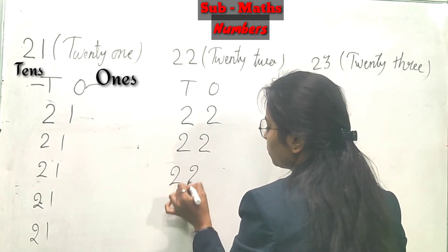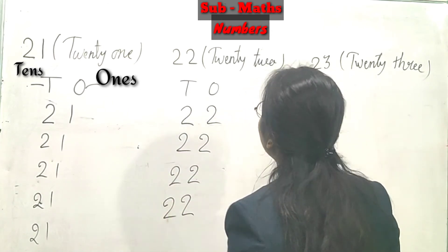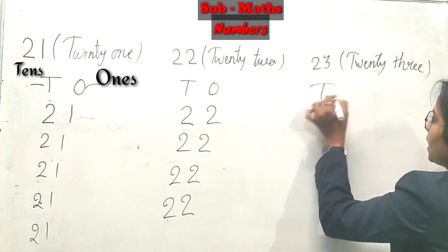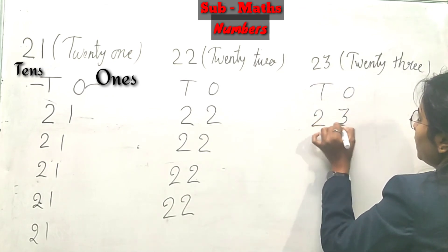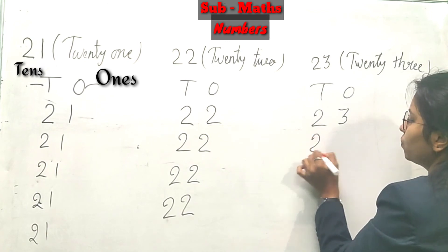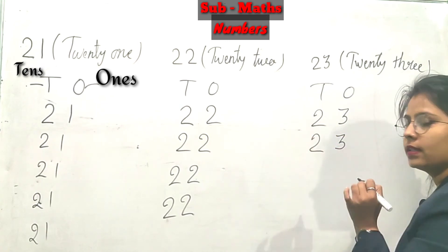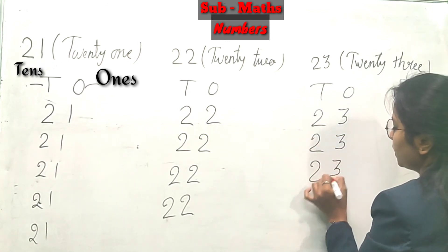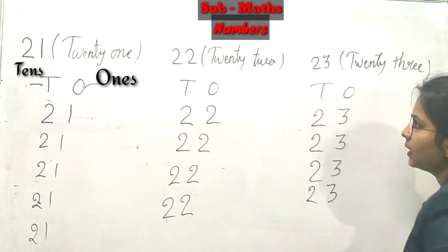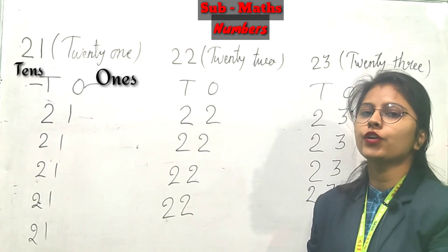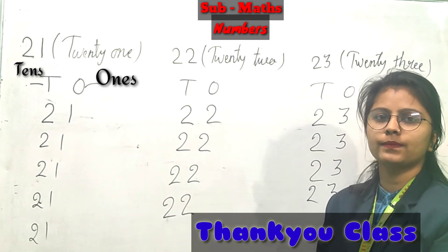Next 23 same - 2 tens, 3 ones. Ok, 23. Ok bachyo ban jayega na. Bohat easy hai. Today class is over. Goodbye class.